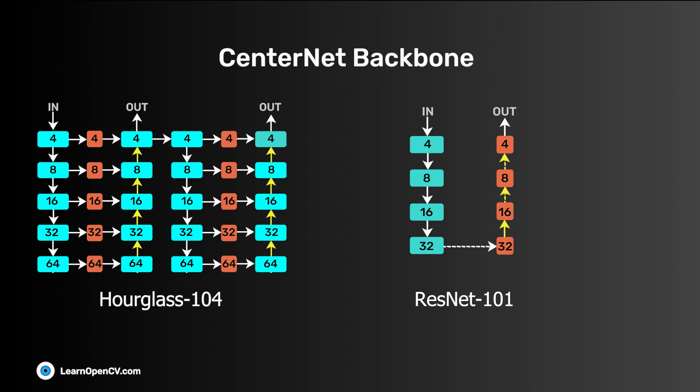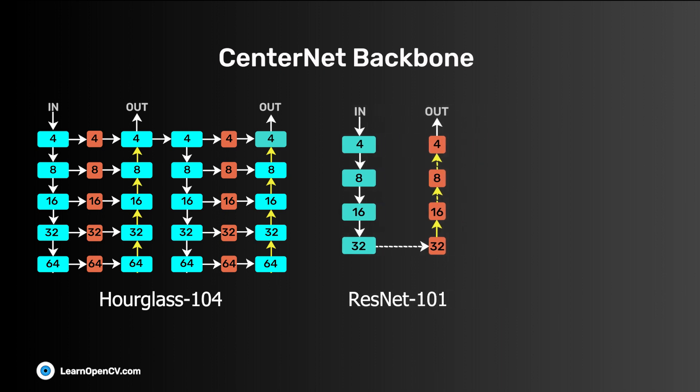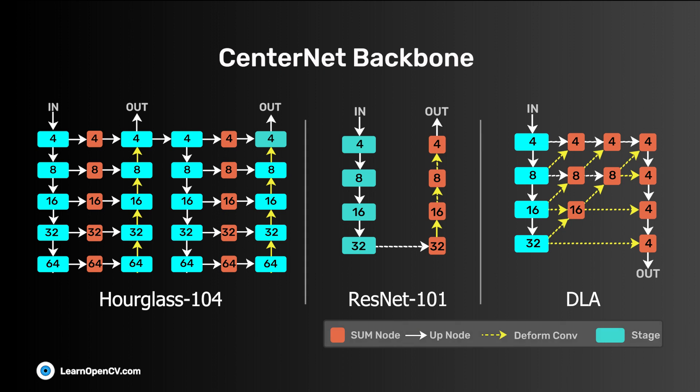Hourglass 104 is used without modification. ResNet 101 is upsampled using transpose convolution and uses deformable convolutions to change the number of channels before upsampling. A modified DLA is also used. It has more skip connections and the convolution layers are replaced with deformable convolution layers for regular upsampling.